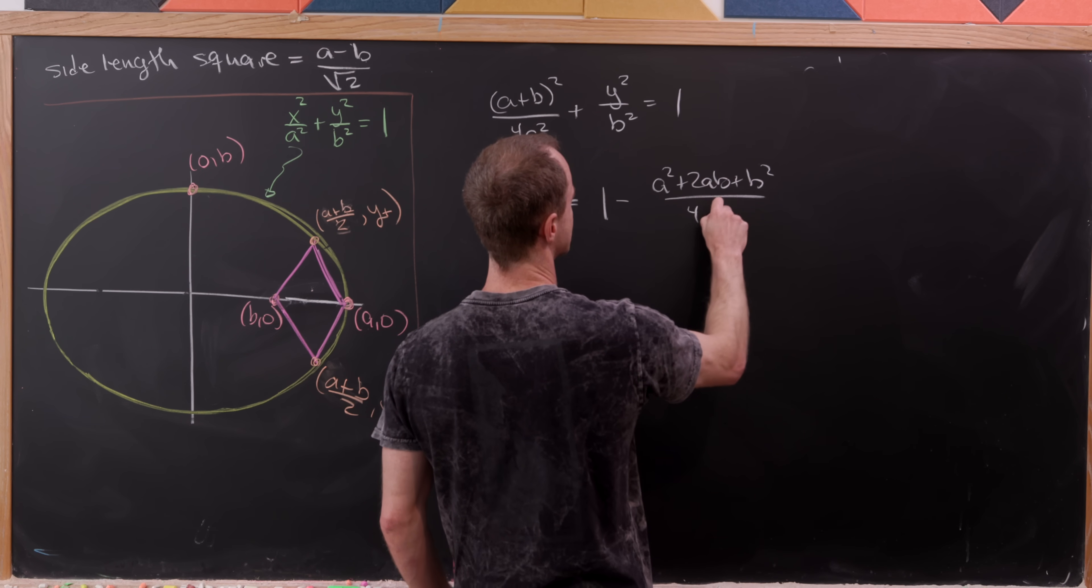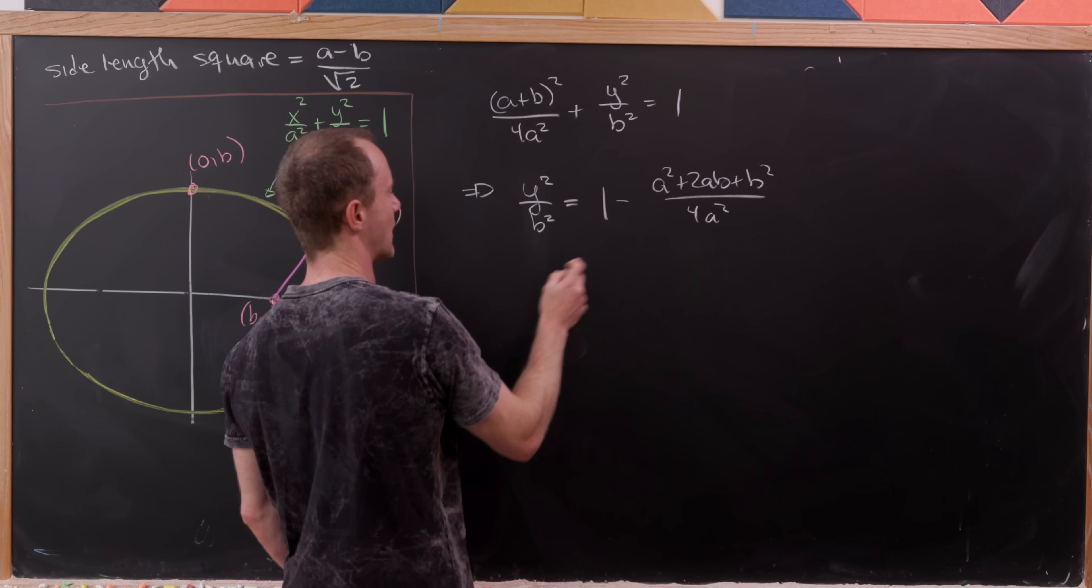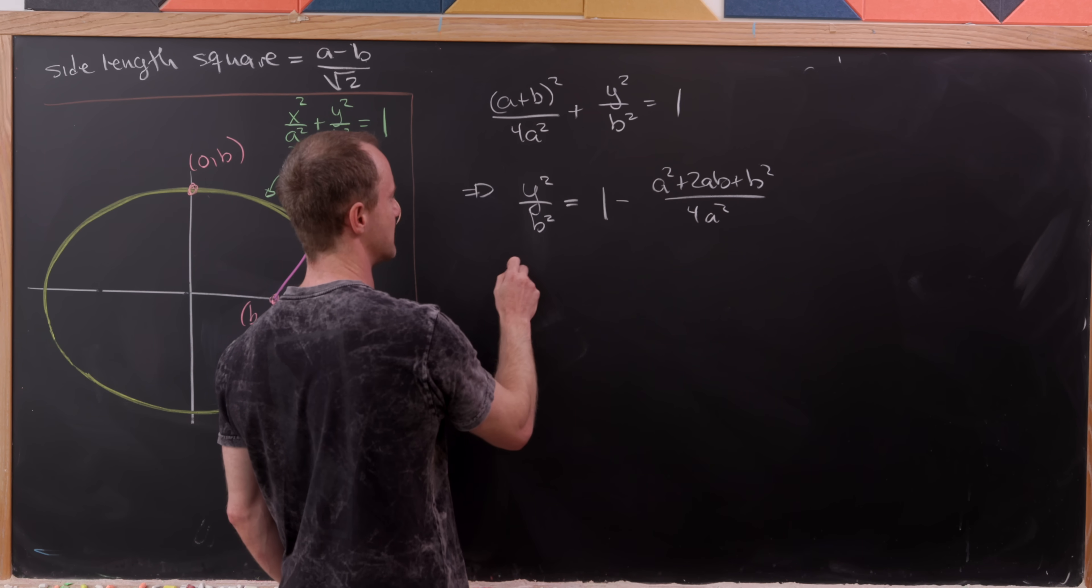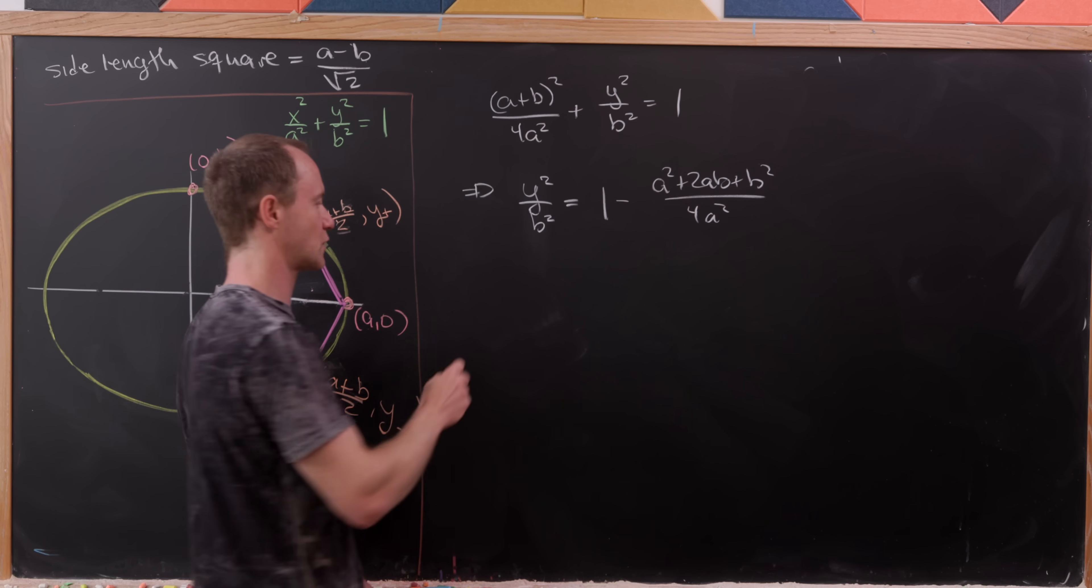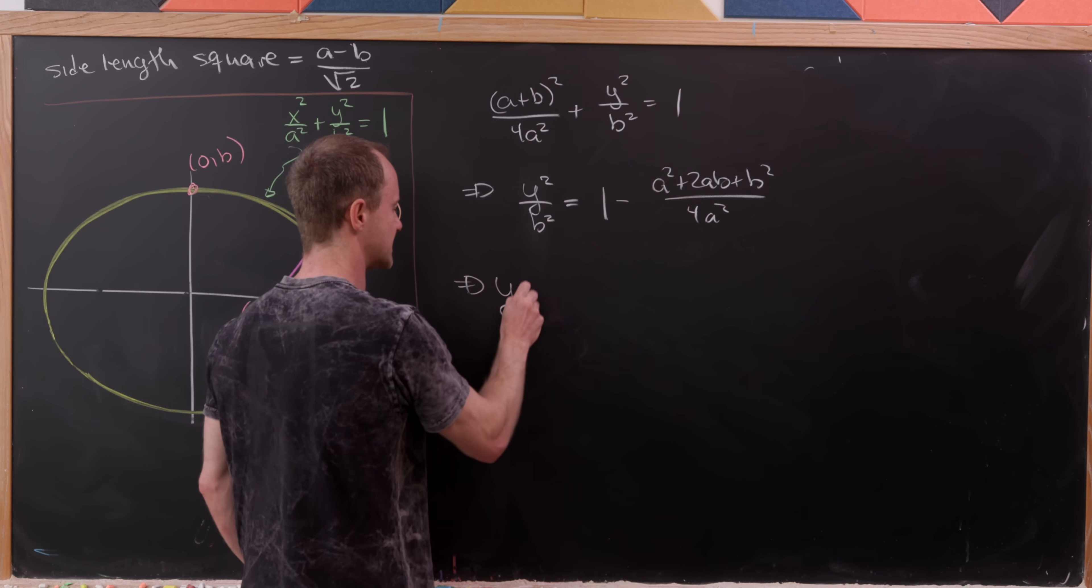Now we can multiply both sides by b², maybe combine everything together, and then take the square root.